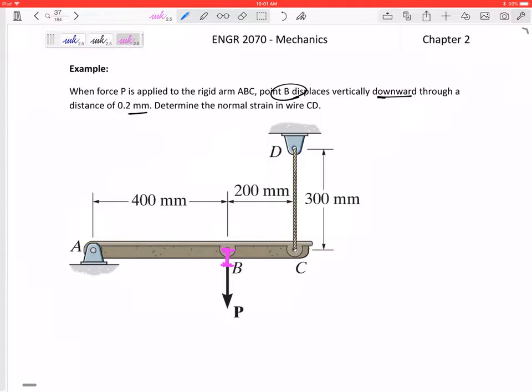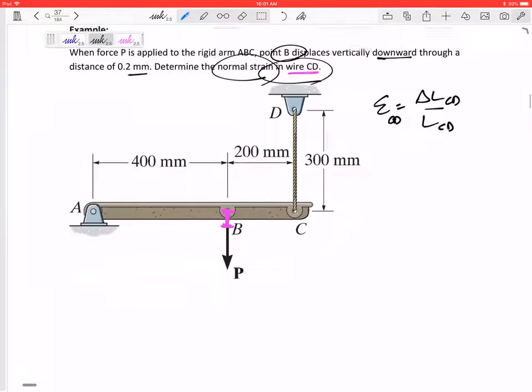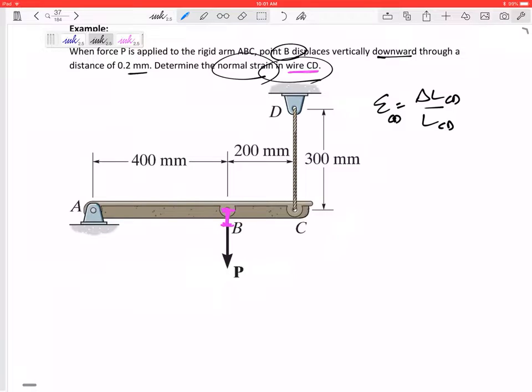Determine the normal strain in wire CD. So we're trying to find epsilon of wire CD. I know that normal strain is delta L over L, but this is for wire CD.